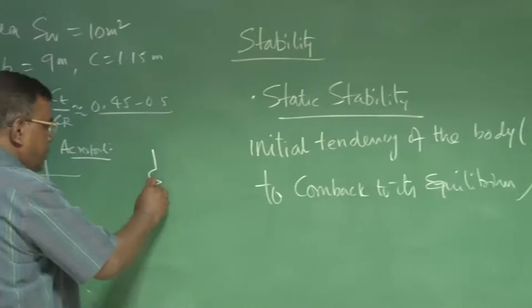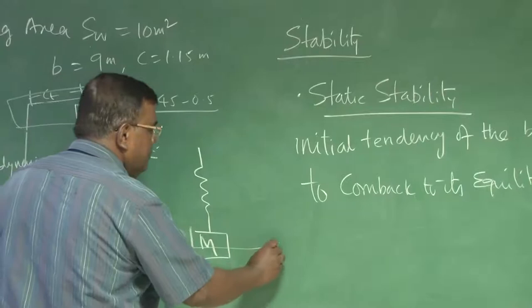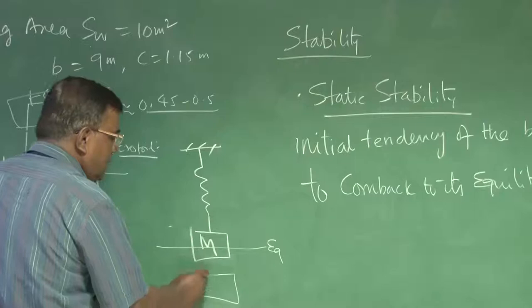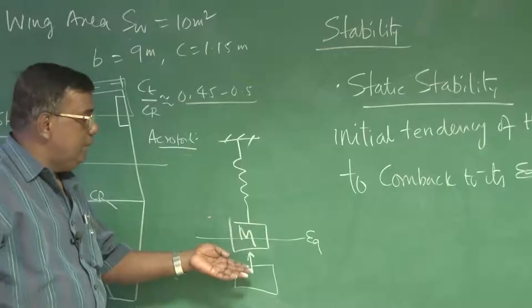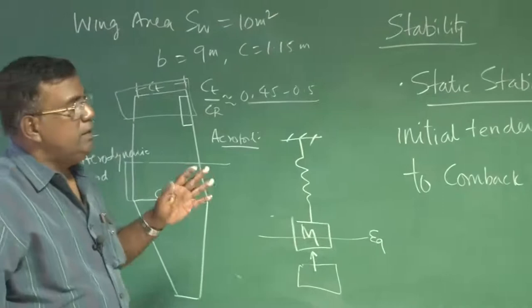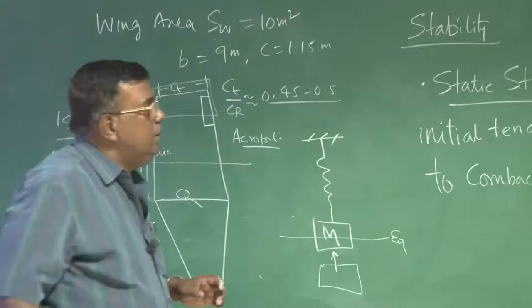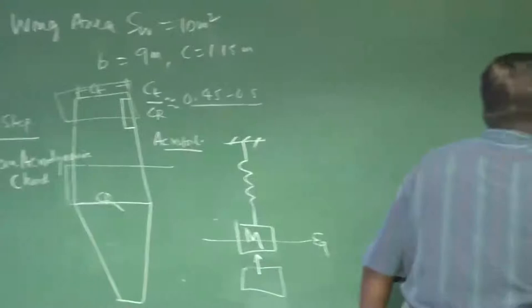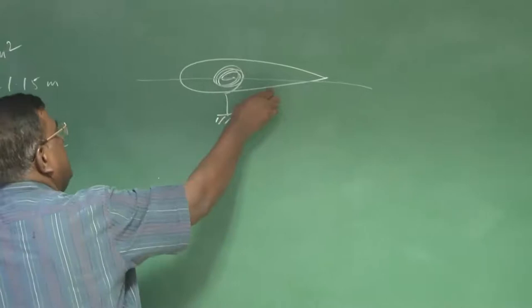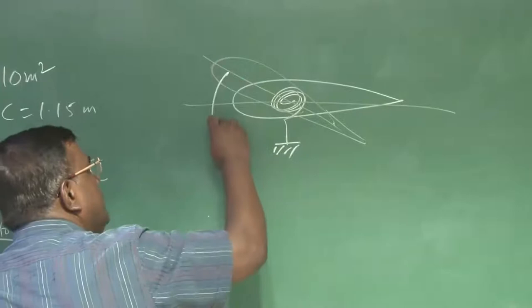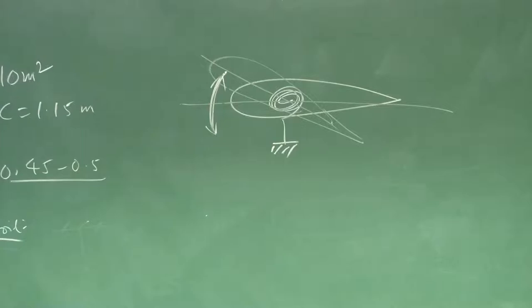To explain this: if I take a spring-and-mass system at equilibrium and disturb it, immediately the spring force acts and tries to push it back to equilibrium — it has the initial tendency to return. Once that initial-tendency condition is satisfied, we say it is statically stable. For an aircraft, if I visualize it through the wing with a coil spring: if disturbed from equilibrium and released, it will again try to come back. So it has static stability.